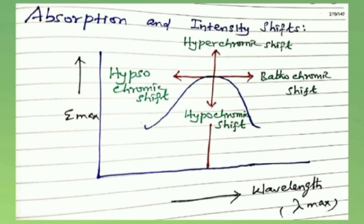The Bathochromic shift is otherwise called the Red shift. In the Bathochromic shift, lambda max moves towards a longer wavelength due to addition of conjugation.